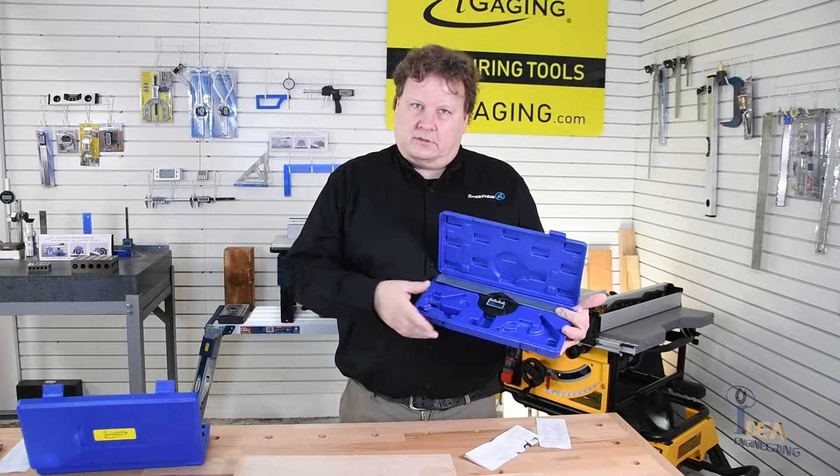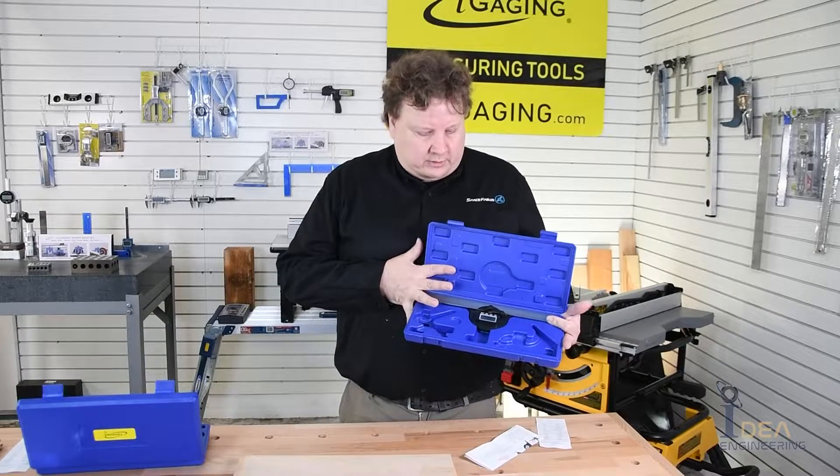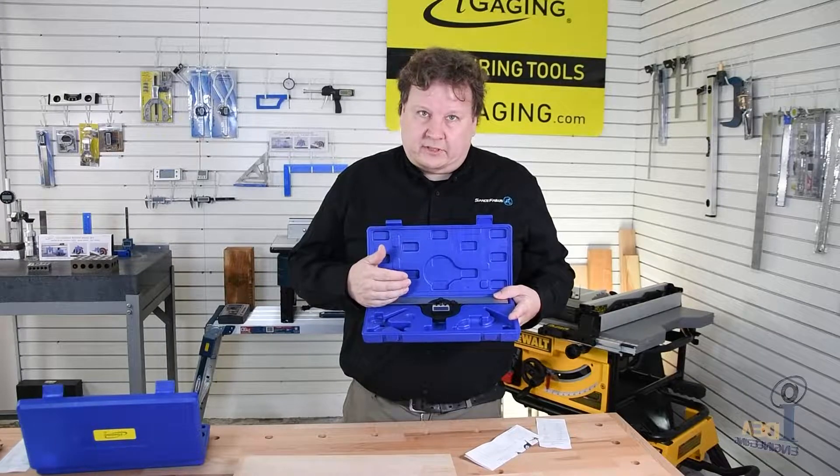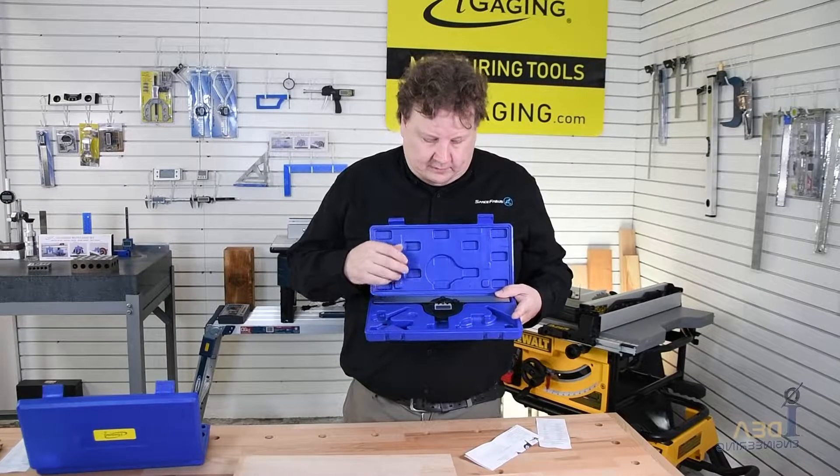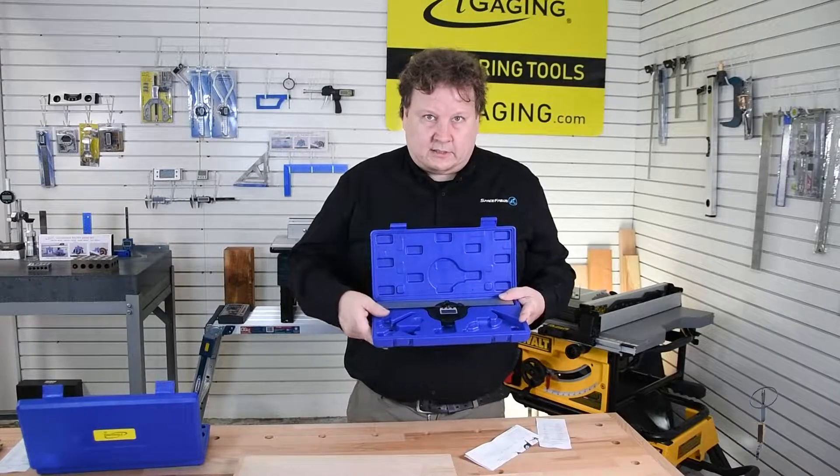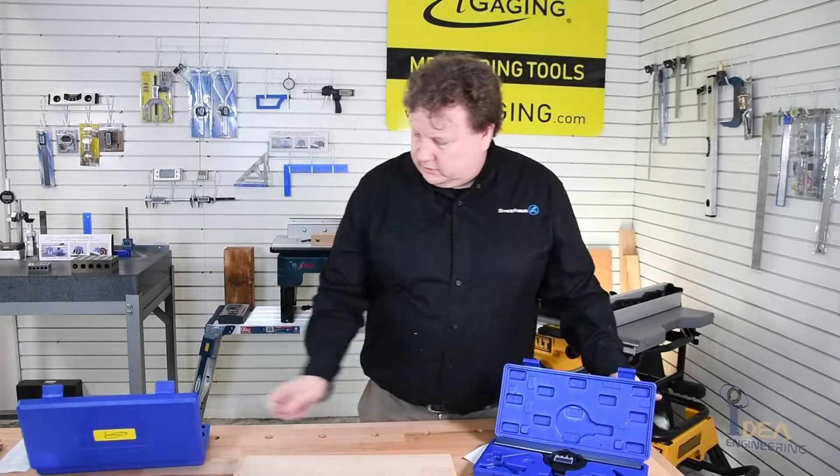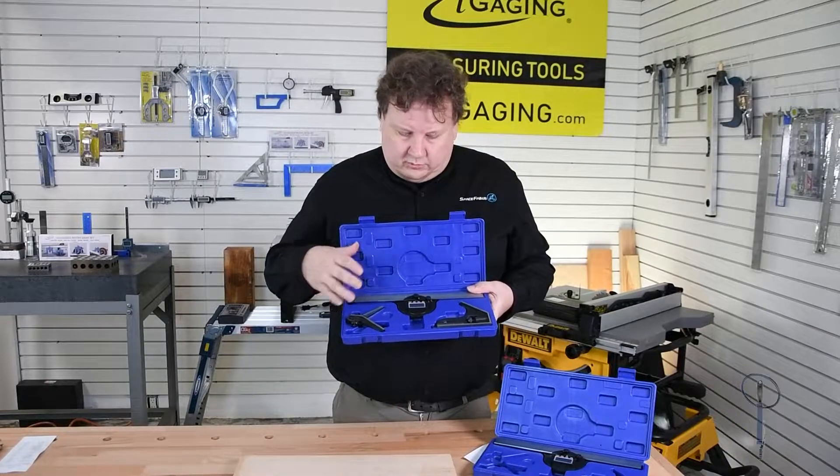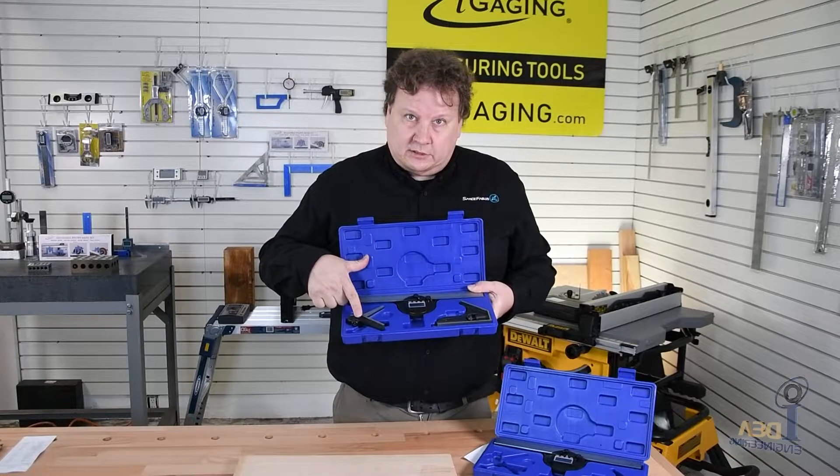So many of you know that we had the standard protractors, but now they have a digital version and this reads the angle with an accuracy up to 0.2 degrees and is available in a two-piece set like this or you can get it in a four-piece set with your centering gauge included.